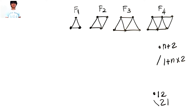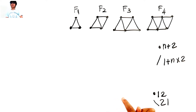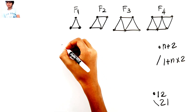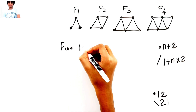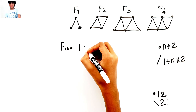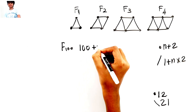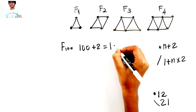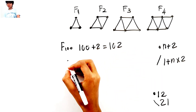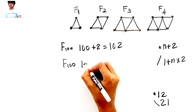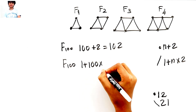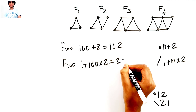What if someone suddenly asked you how many dots and how many lines figure one hundred would have? We have the formulas — let's use them! For the dots: one hundred plus two is 102. For the lines: one plus one hundred times two is 201. That was super easy!